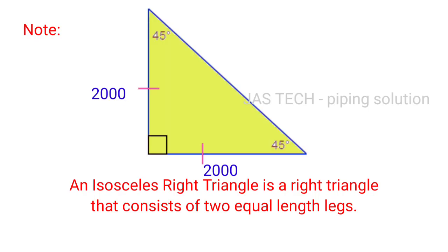For our triangle we have two information now. One is the degree, 45 degrees. Another one is rise, 2000 mm. Note: an isosceles right triangle is a right triangle that consists of two equal length legs. That means, for example, if triangle one side is 2000, another side is also 2000. This is an isosceles right triangle with angle 45 degrees.